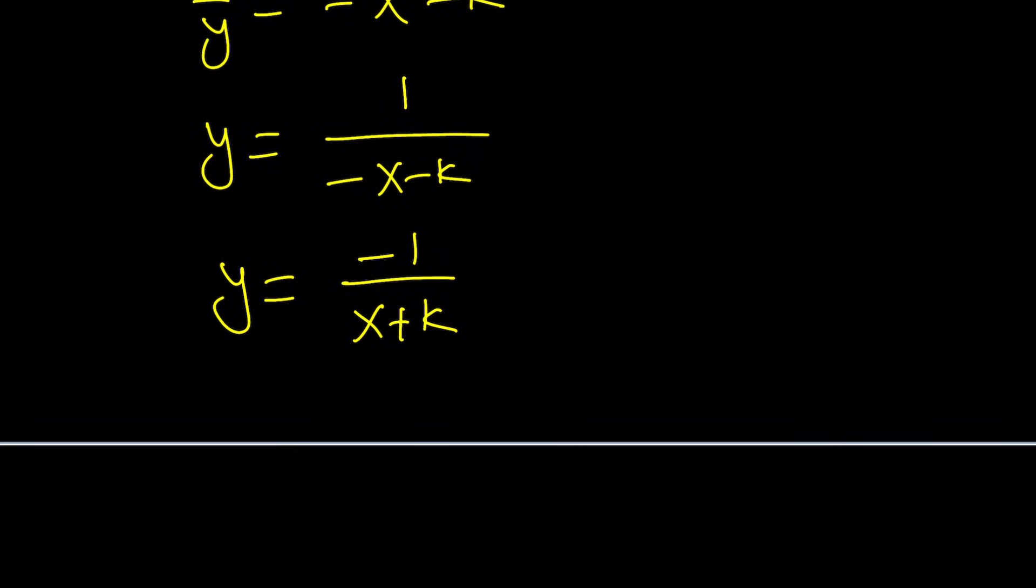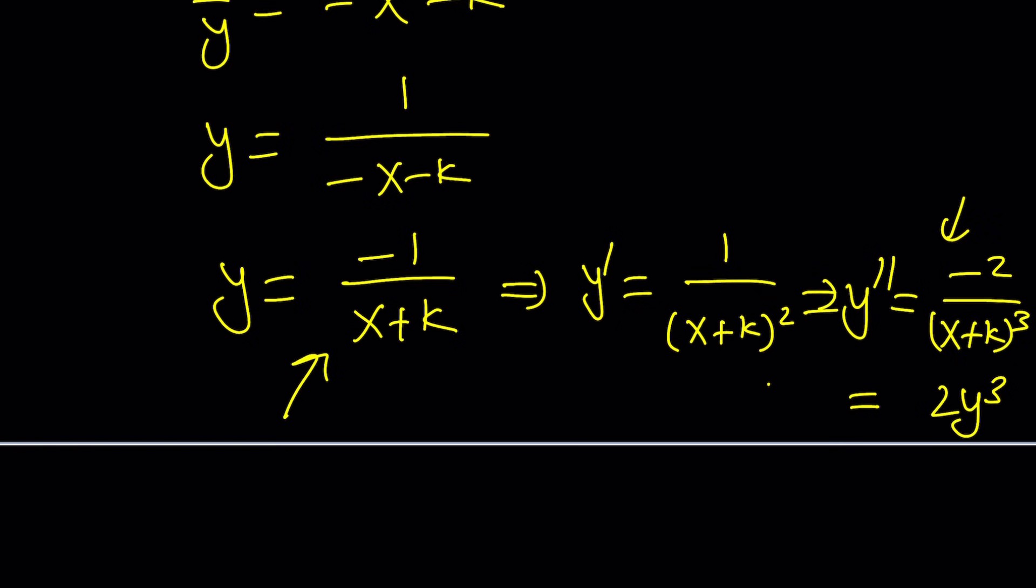Now, let's go ahead and test it out. Is this going to work? Well, differentiate it once. You're going to get 1/(x + k)². Differentiate it one more time. You're going to get -2/(x + k)³. Just use the power rule with the negative power, and guess what? This is the same thing as 2y³. I mean positive 2y³. Sorry about that. They're both negative, so it should be 2y³, which means it satisfies the equation.